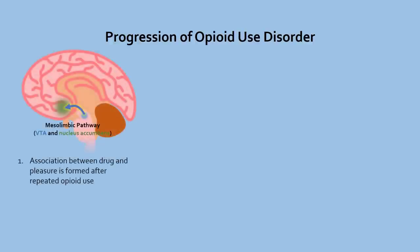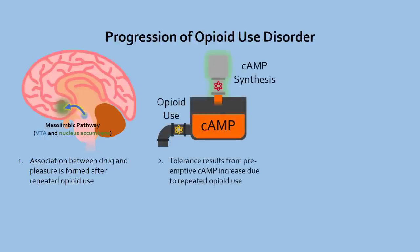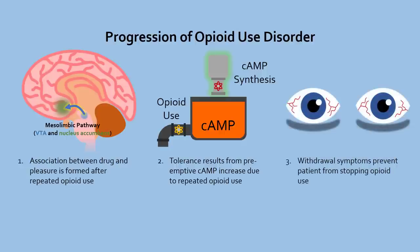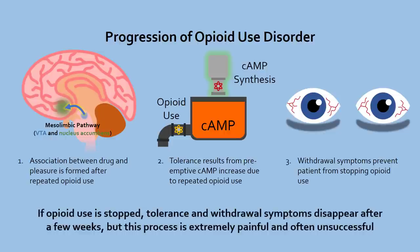To summarize, the progression of opioid use disorder starts with the brain associating pleasure with opioid use from repeated stimulation of the mesolimbic reward pathway. Long-term use causes tolerance through increasing cAMP preemptively, creating the need for more and more drug to cause the same effect. Taking the drug away results in withdrawal symptoms as there are no opioids to cancel out the compensatory increase in cAMP. Thus, the opioid user becomes dependent on increasing doses of opioids to continue feeling somewhat normal. If opioids are not used for a few weeks, tolerance and withdrawal symptoms eventually disappear as the body stops overcompensating to return to homeostasis — but this is such an excruciating process that going cold turkey is rarely effective.